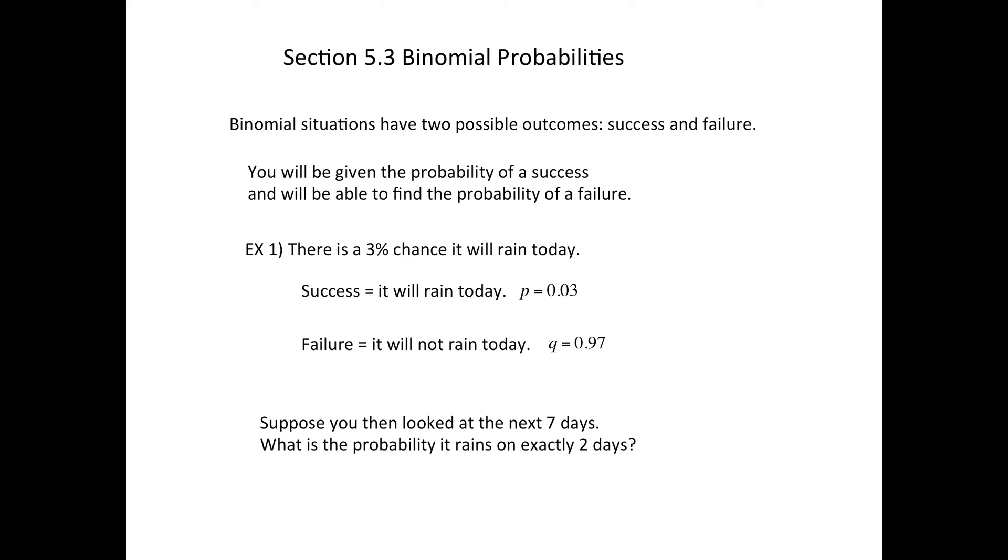Okay, then the idea is now suppose you look at the next seven days. So based on this information of 3% chance, suppose that that applied for the whole week, then what's the probability that it rains on exactly two days? That's where we're headed, but we've got a little bit of work to get there.